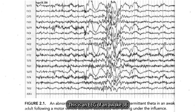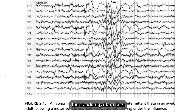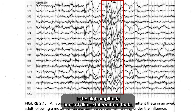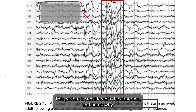This is an EEG of an awake 36-year-old adult following a motor vehicle accident. The standout pattern here is the high amplitude burst of diffuse intermittent theta. This pattern is considered to be abnormal, and here's why.